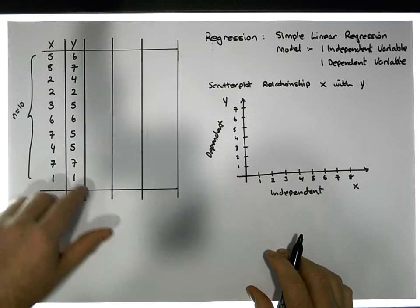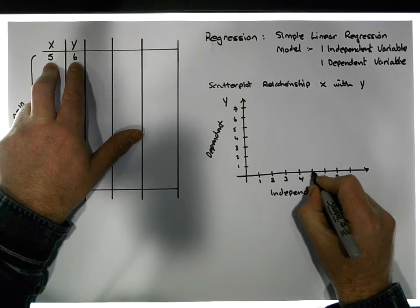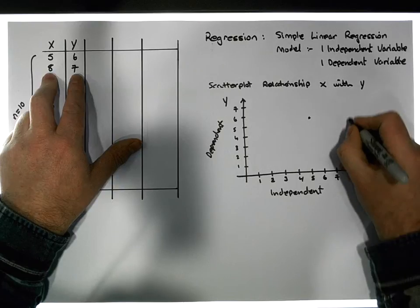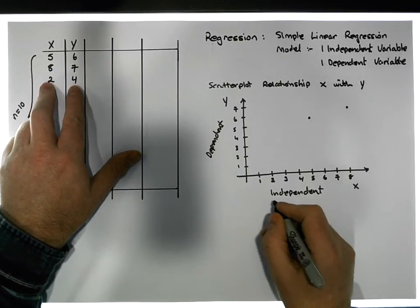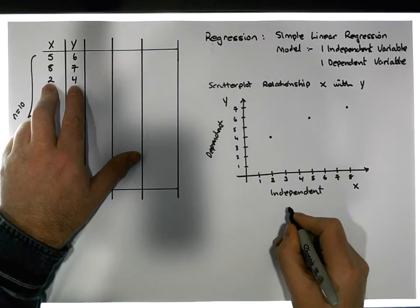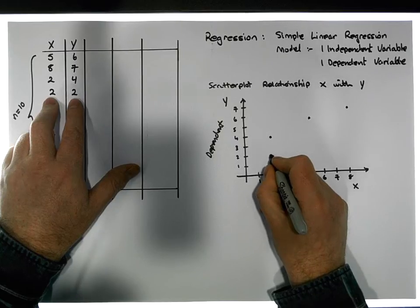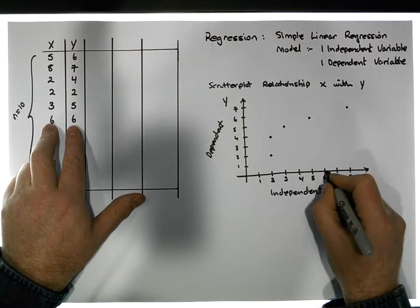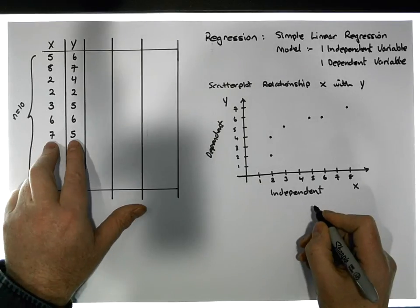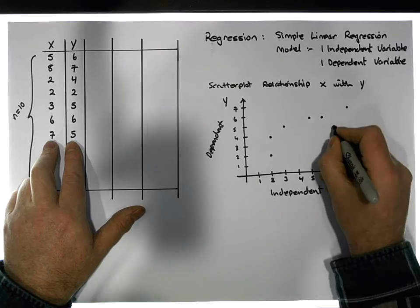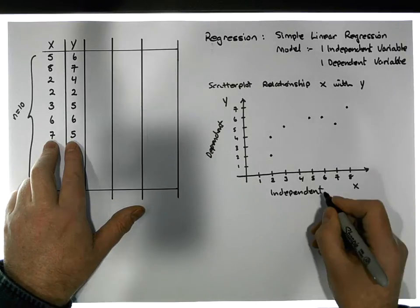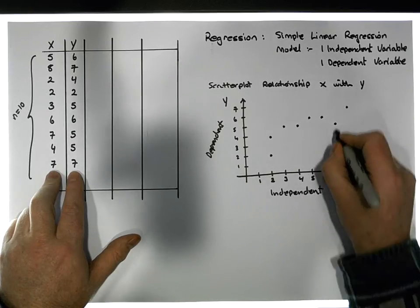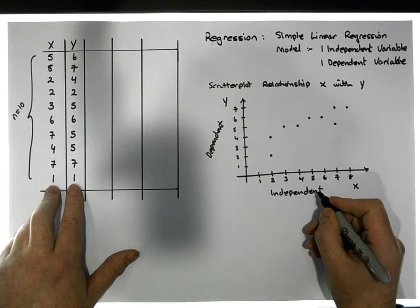What we'll do is plot these particular points in space as x, y coordinates. When x is 5, y is 6 — that gives us a dot around here. When x is 8, y is 7 — a dot around here. When x is 2, y is 4 — a dot here. When x is 2, y is 2 — a dot here. When x is 3, y is 5 — a dot here. When x is 6, y is 6 — a dot here. When x is 7, y is 5 — a dot here. When x is 4, y is 5 — a dot here. When x is 7, y is 7 — a dot here. And finally when x is 1, y is 1 — a dot here.